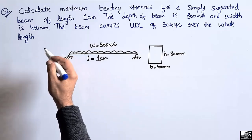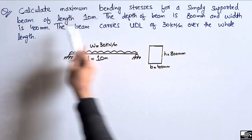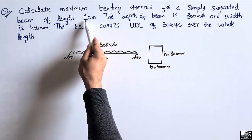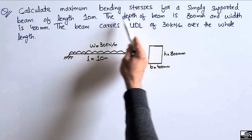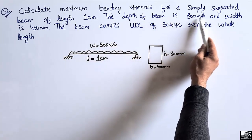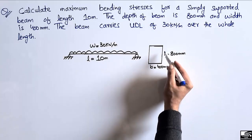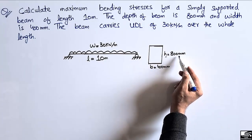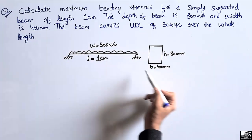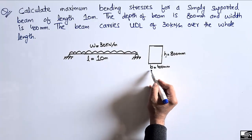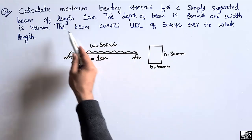The problem states: calculate the maximum bending stresses for a simply supported beam of length 10 meters. The depth of the beam is 800 millimeters and the width of the beam is 400 millimeters.